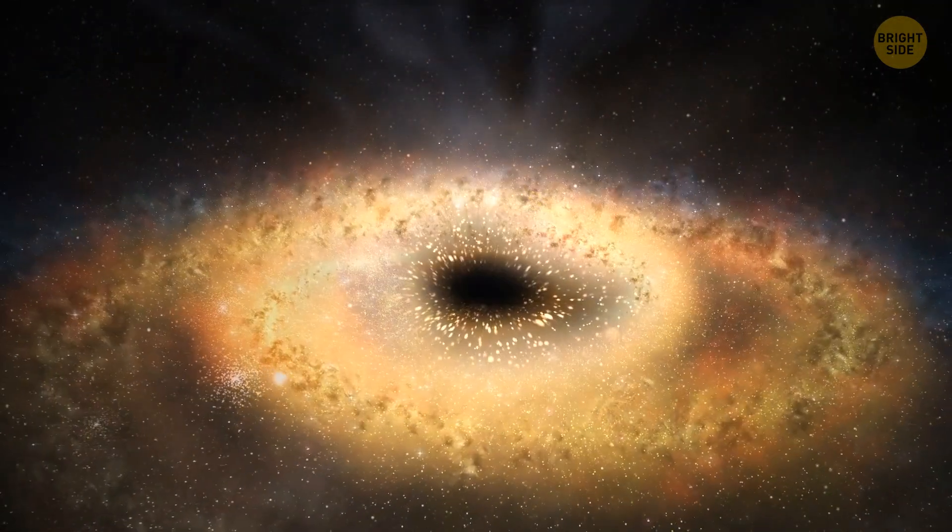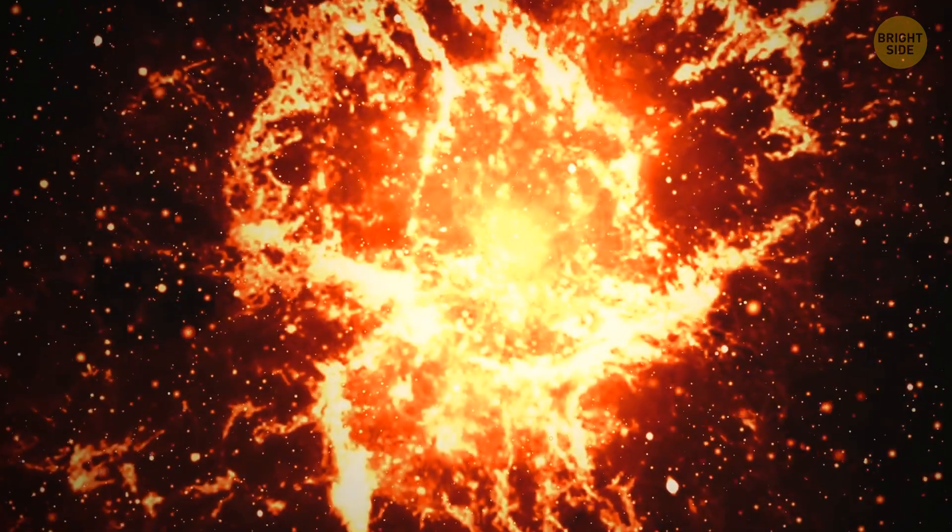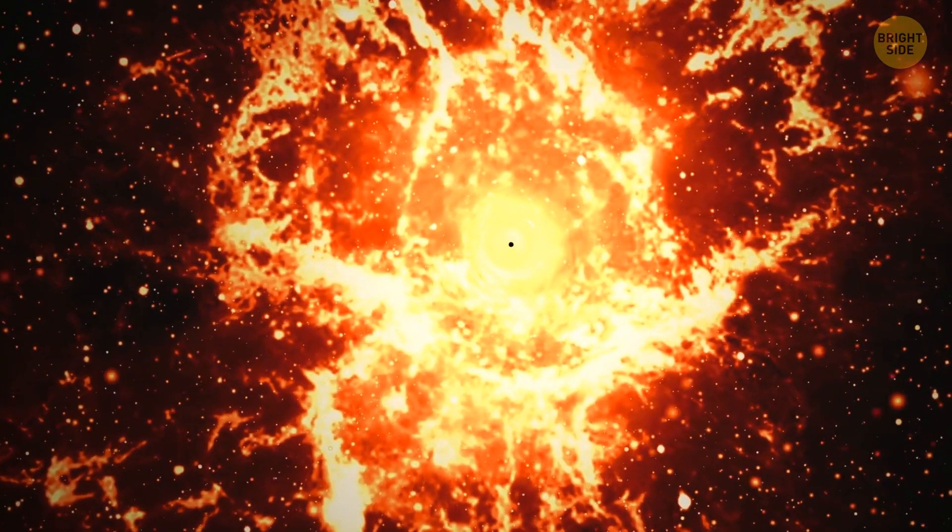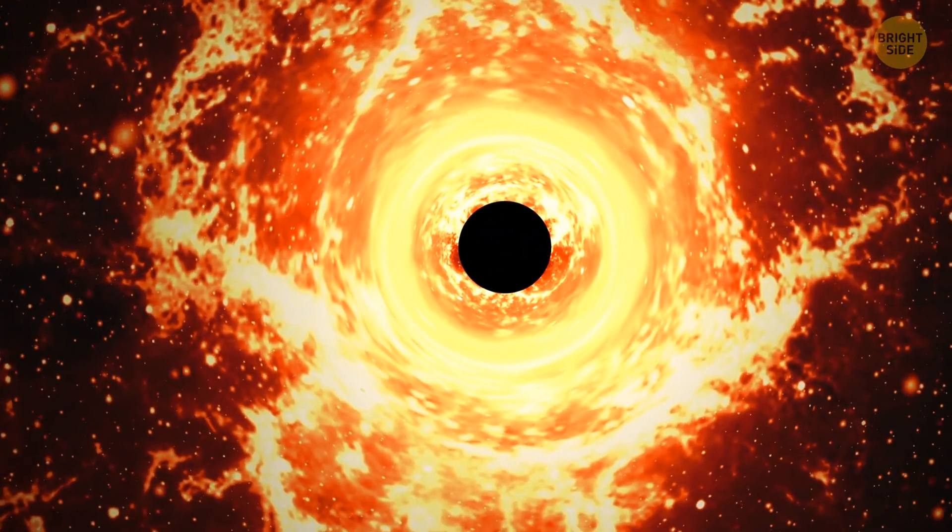There is a theory that galaxies get formed around black holes. This means that when a large star explodes, a black hole appears in its place, and then the rest of the galaxy just forms around it.